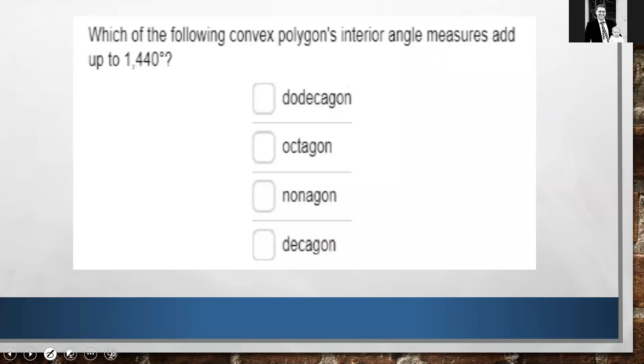Okay, which of the following convex polygons interior angle measures add up to 1440 degrees? Okay, so let's look at this for a second. We know that we took some n minus 2 times 180 and it gave us 1440. So let's go ahead and divide each side by 180. The reason I'm doing this is I'm going to solve for n. I'm going to solve for the number of sides that we have. This is going to give me 8. So if I want to add to each side 2, I'll get n all by itself and n is equal to 10.